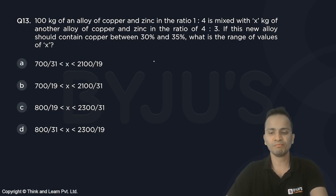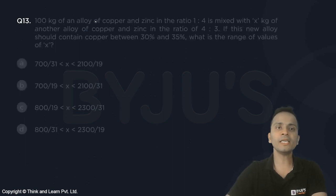Okay, so let's have a look at this. 100 kg of an alloy of copper and zinc in the given ratio is mixed with x kg of another alloy of copper and zinc. They are mixed and this new alloy...